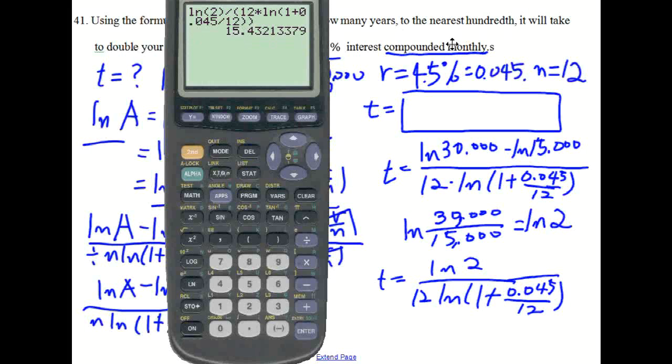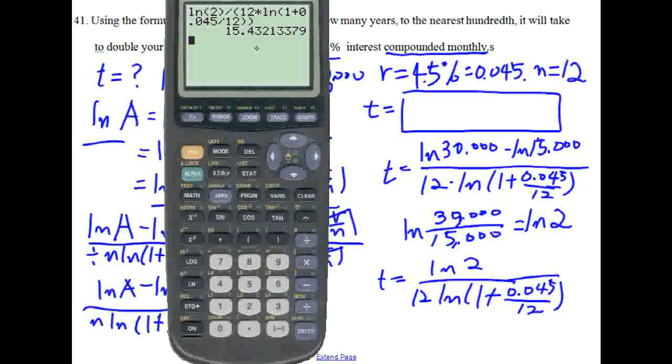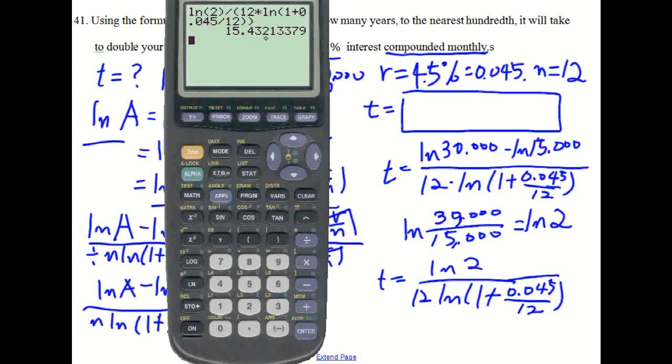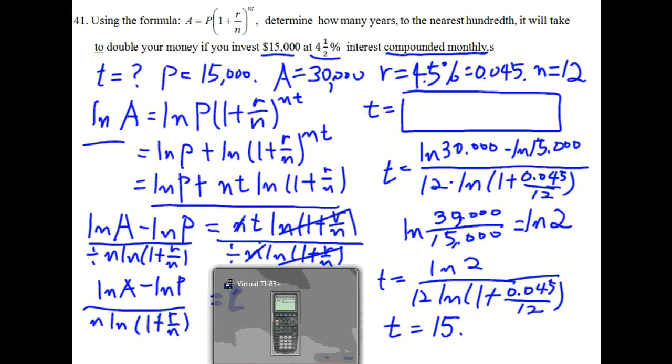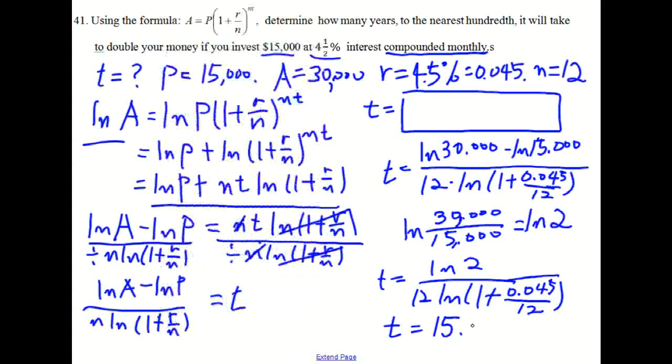So we have to round the number off to the nearest hundredth. So we look at the digit in the third place, third decimal place, that is 2. So we can just discard the number, the digit. So we get t equals 15 point what was that? 15.43. You have to have 2 decimal digits. So this is your answer.